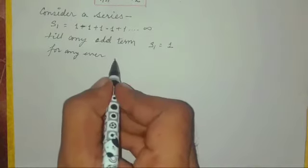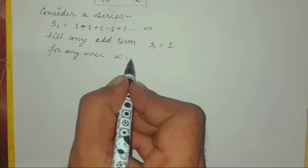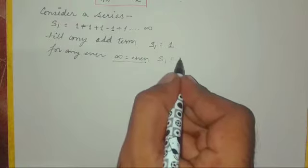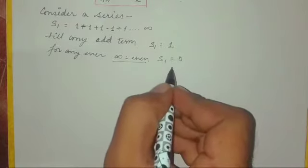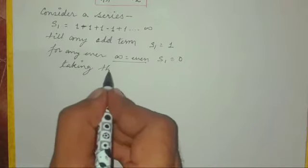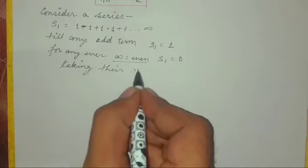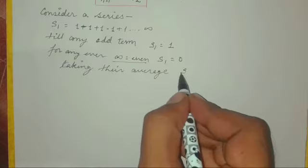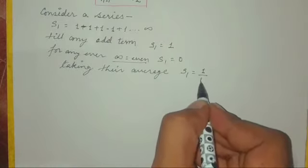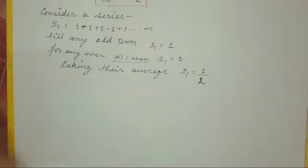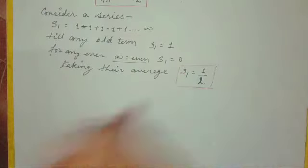If the number till infinity, if we imagine that it is an even number, we will get zero because 1 minus 1 will give zero, and then again 1 minus 1 will give zero. All the ones will be cancelled out with negative ones. But if we take infinity to be any odd number, then we will get 1. If we take their average, we can get zero or 1, and their average is 1 by 2. So here we get one clue: S1 equal to 1 by 2.